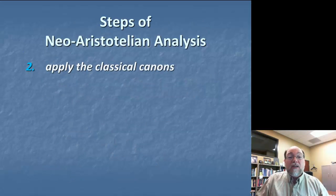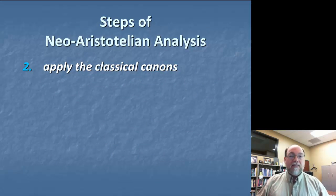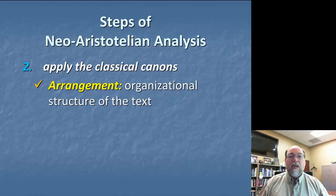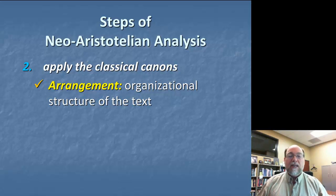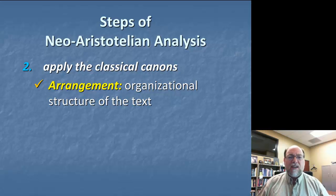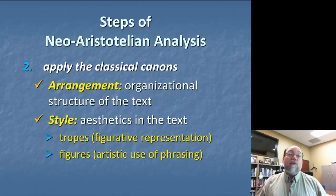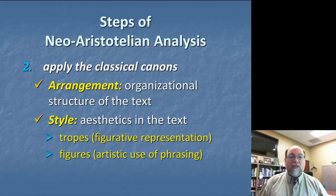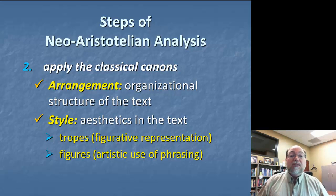As we wrap up discussing invention, it's important to note that the other classical canons would follow suit in a more full-blown neo-Aristotelian analysis. What you might do is engage in a further examination of arrangement — the organizational structure of the advertisement — to see how pieces are edited and structured together sequentially. We can certainly focus on the element of style: the use of visual imagery and music and their juxtaposition. Similarly, we can talk about stylistic things such as tropes, figurative representations such as metaphors, or the artistic use of phrasing. In other rhetorical criticism lessons in this vodcast series, we'll talk about some of these stylistic elements.